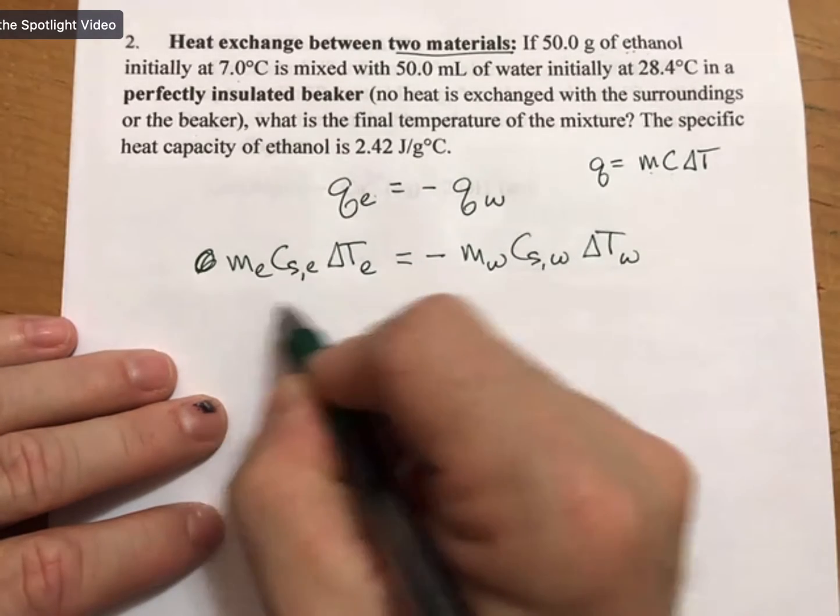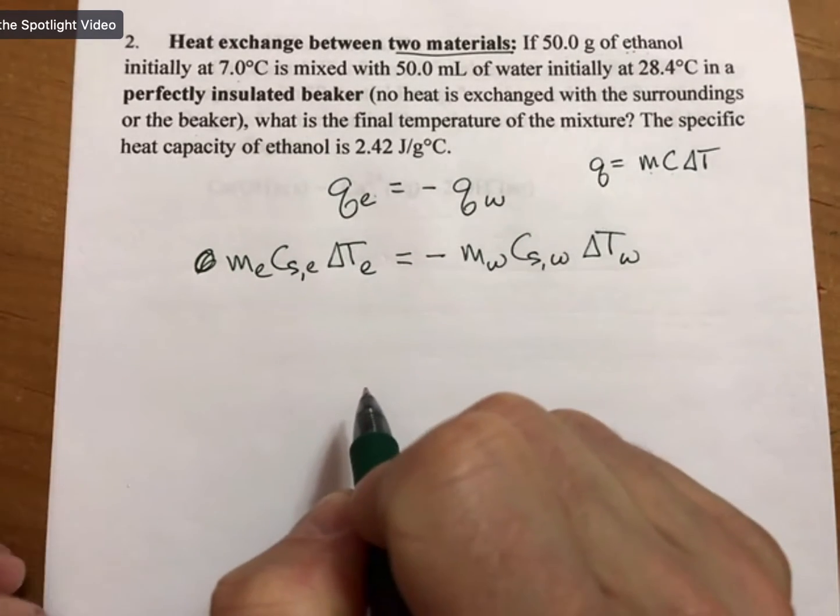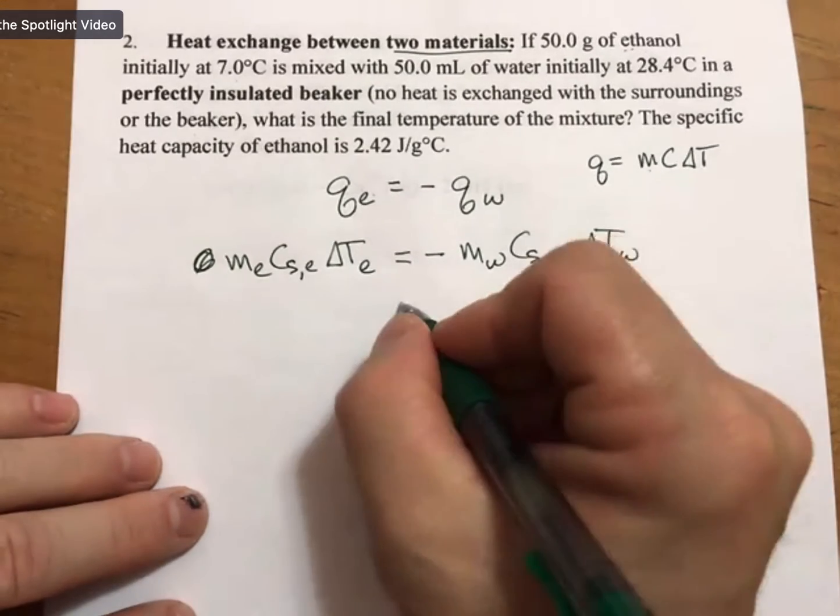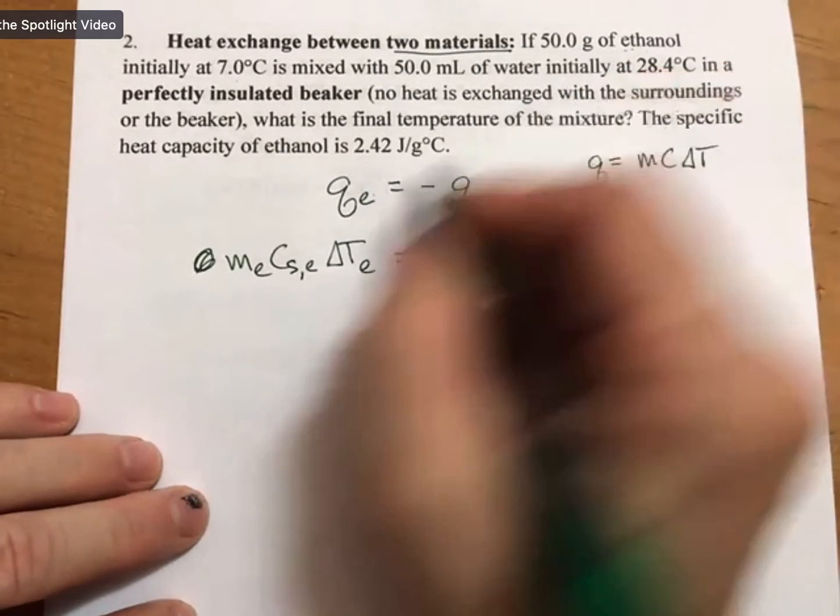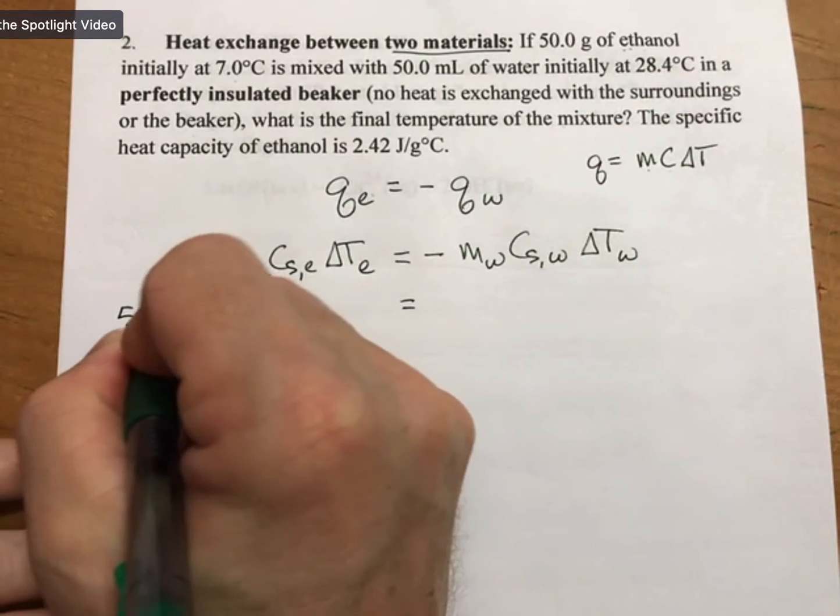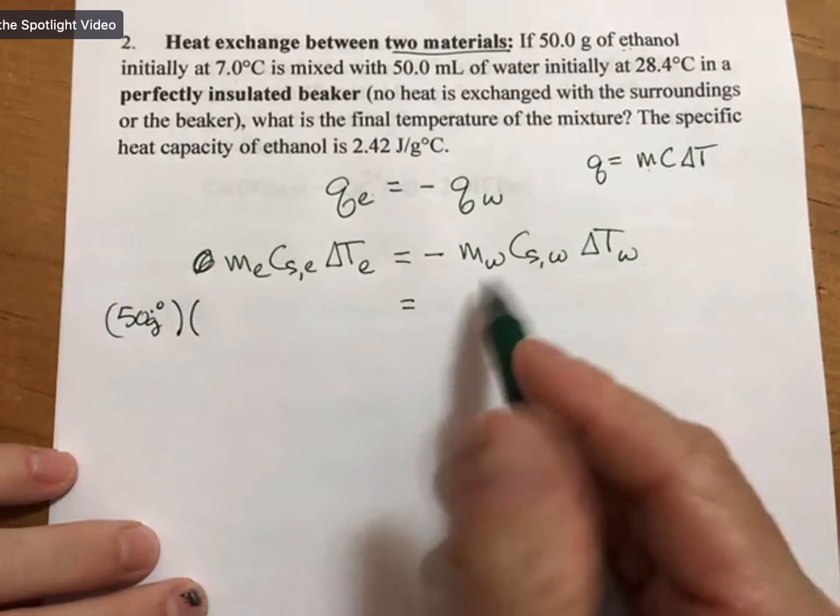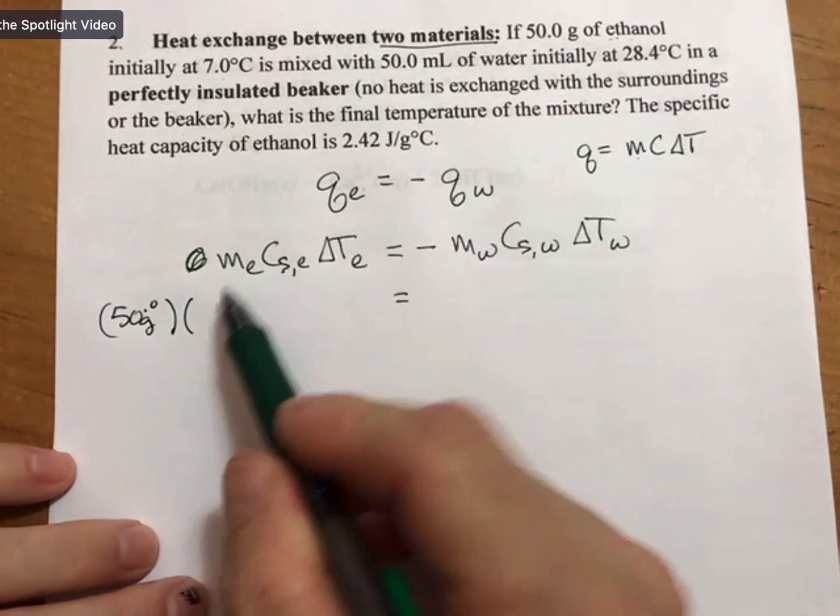But this is with all the subscripts in it. Now we can go ahead and fill everything in. We do have 50 grams of ethanol, and we do have the specific heat capacity of ethanol.